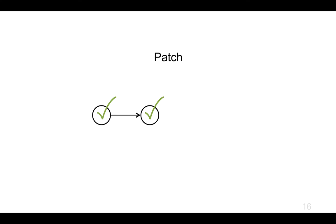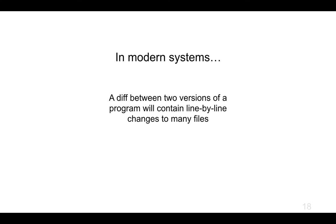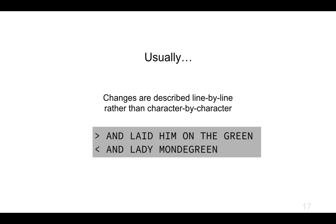I was doing this slightly differently than most computer diff programs actually do. Usually changes are described line by line rather than character by character. So if we run diff, what we'd get is: it would say we've taken out the line 'and laid him on the green' and inserted the line 'and Lady Mondegreen.' A diff between two versions of a program contains line-by-line changes to many files.